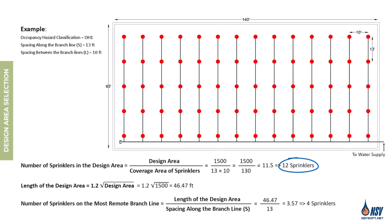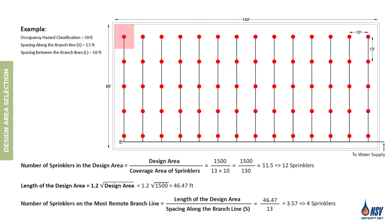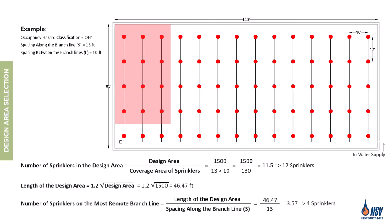Now that we've calculated the total number of sprinklers in the design area as well as the number on the most remote branch line, we can begin locating them on the layout. When sprinklers are installed at the same elevation, have equal coverage areas, and protect the same hazard occupancy, the farthest sprinkler is the hydraulically most remote, because the water traveling to it experiences the greatest pressure loss. By selecting the other three adjacent sprinklers on the most remote branch line, we complete the total required on that line. Since we need 12 sprinklers total, we select four additional sprinklers from the second and four from the third most remote branch line. In the next video, we'll review additional NFPA 13 requirements related to design area selection and explore more complex scenarios.